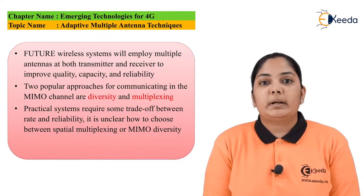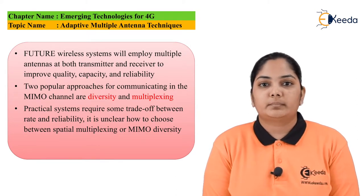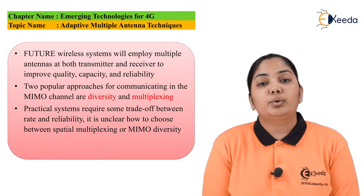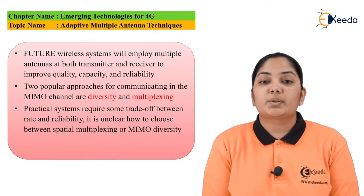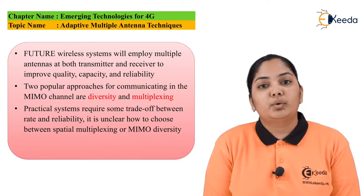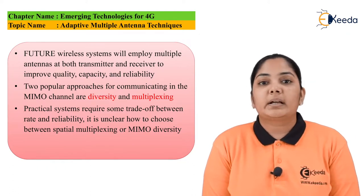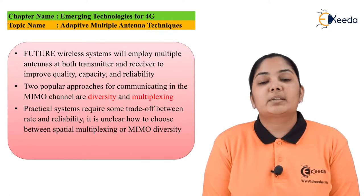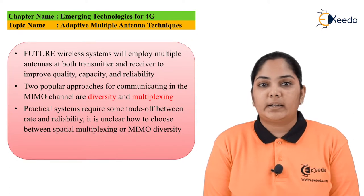Spatial multiplexing and diversity are equally important for us. Spatial multiplexing can be related to OFDM technology where we have multiple sub-carriers transmitting the information. Hence, MIMO has two flavors: diversity, which gives reliability of the communication system, and spatial multiplexing, which gives higher data rates.